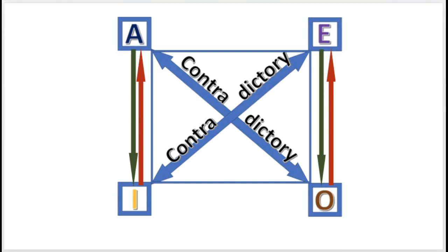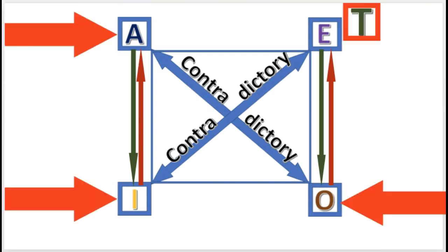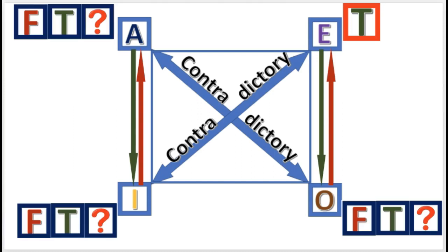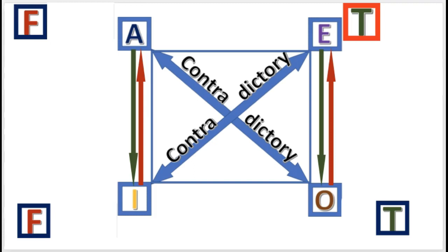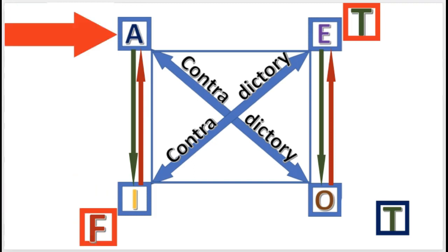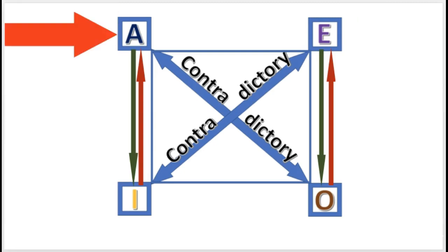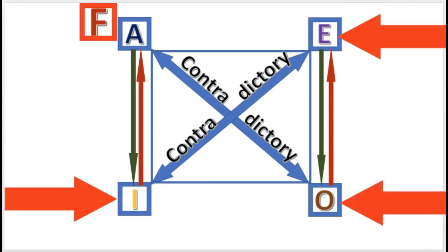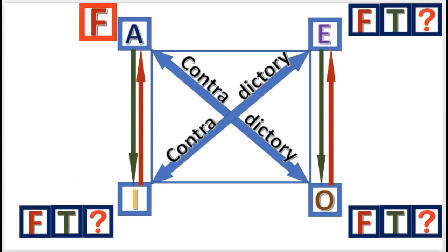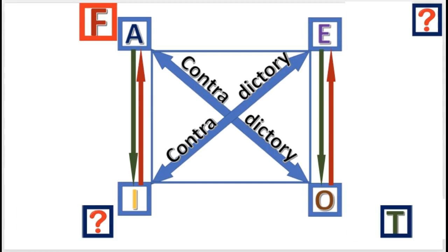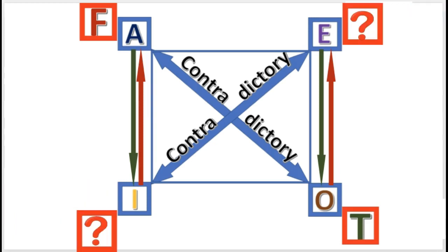Next practice problem: If E is true, what are the other truth values? I is false, A is false, and O is true. Next practice problem: If A is false, what are the other truth values? O is true, and E and I are undetermined.